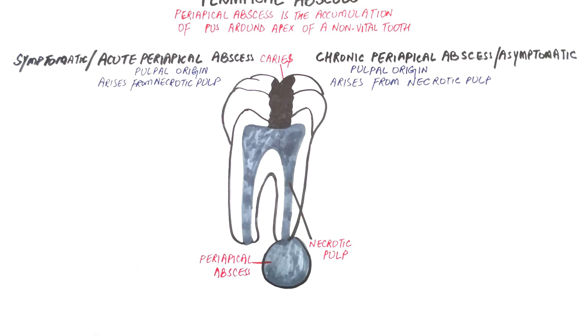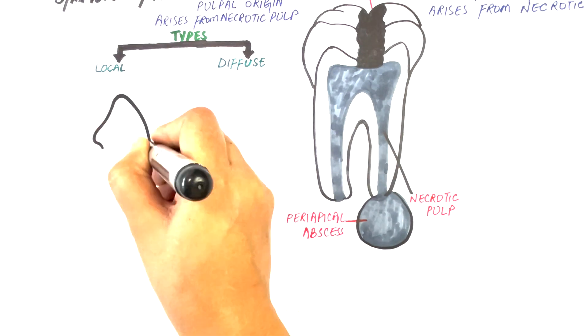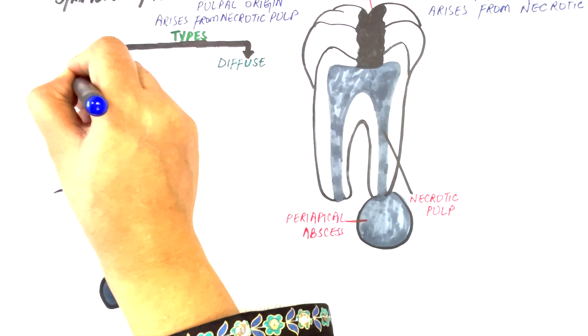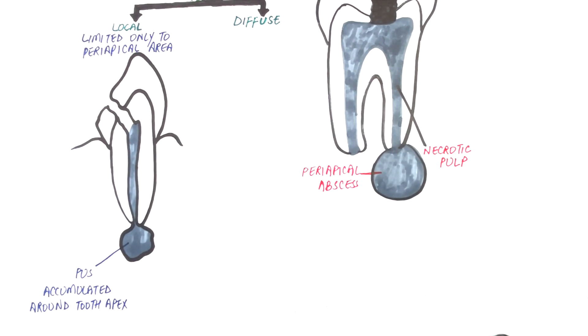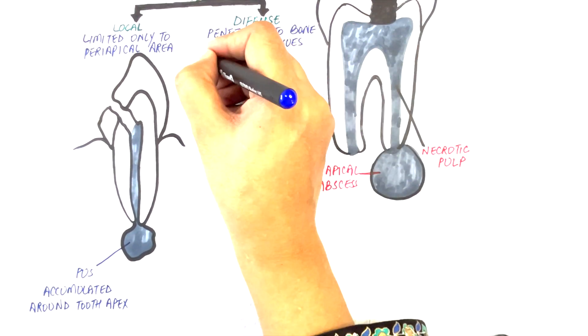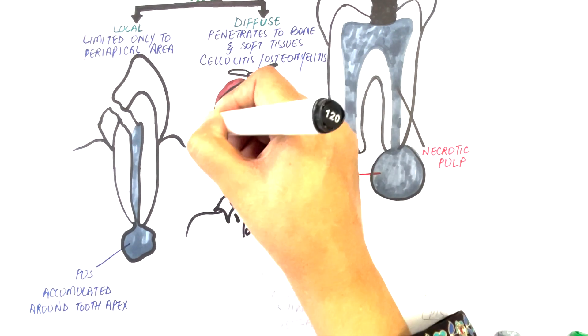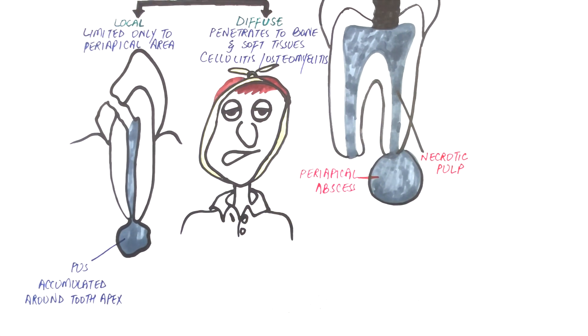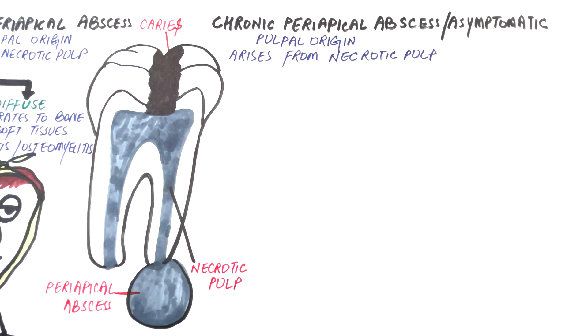An acute periapical abscess can be localized or diffuse. Localized periapical abscess is limited only to the periapical area. The pus is accumulated within the periapical zone, while diffuse abscess can penetrate through an area of least resistance, usually the buccal cortical plates of bone, and invade into the adjacent soft tissues, thereby causing cellulitis or osteomyelitis, which is a severe condition and will be covered in my upcoming videos. In this tutorial, we will look into the localized type of acute periapical abscess and the chronic periapical abscess.